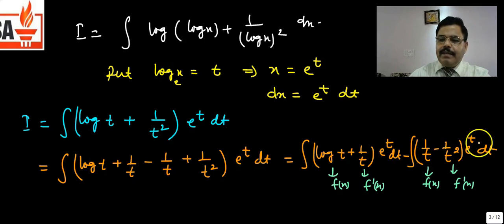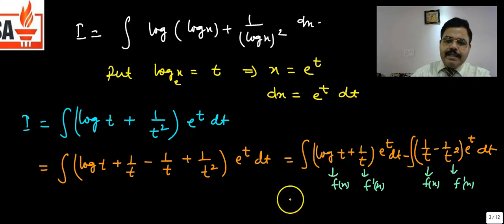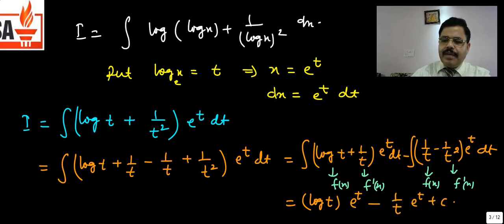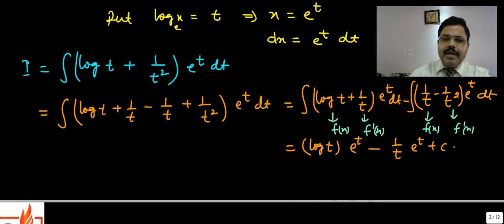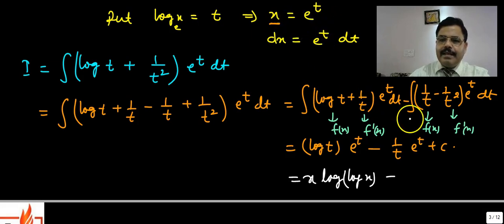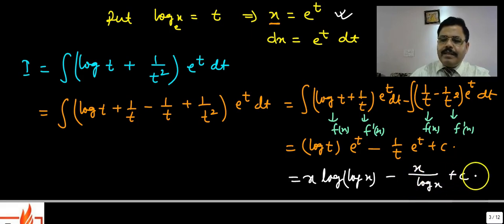Applying the formula, we get eᵗ·log t from the first part and eᵗ·(1/t) from the second. The final answer in terms of x: since eᵗ = x and t = log x, the answer is x·log(log x) − x/(log x) + C.